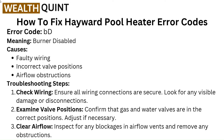Error code BD — meaning Burner Disabled. Causes: faulty wiring, incorrect valve positions, airflow obstructions. Troubleshooting steps: Check wiring — ensure all wiring connections are secure and look for any visible damage or disconnections. Examine valve positions — confirm that gas and water valves are in the correct positions and adjust if necessary. Clear airflow — inspect for any blockages in airflow vents and remove any obstructions.